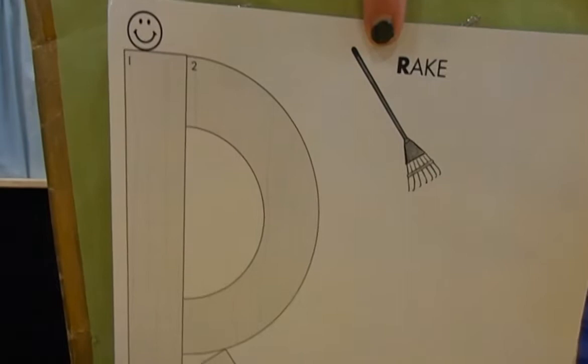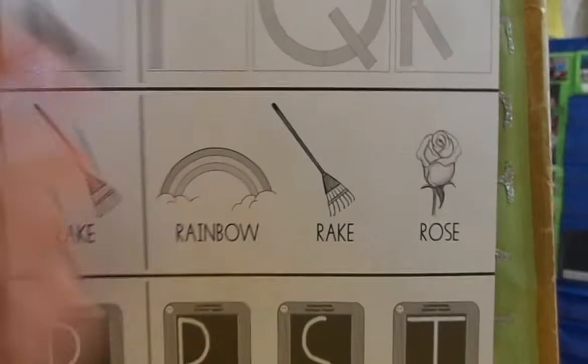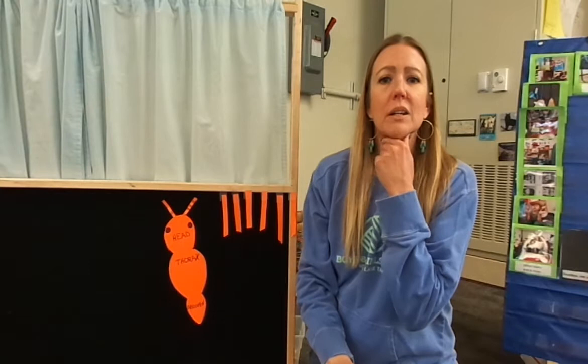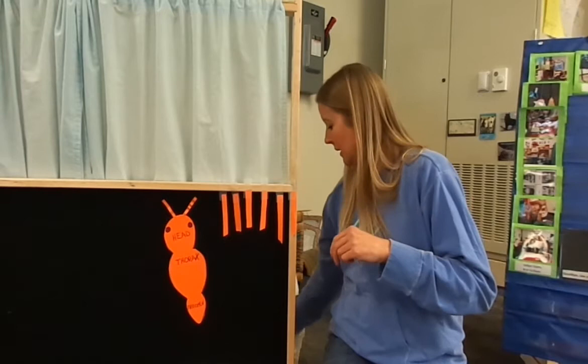Here's a word that starts with the letter R — it's a rake! R, R, R, rake. Let's think of some other words: rainbow, rake, rose. Can you think of any other words that start with the R sound? Look at a parent or someone in the room with you and say a word that starts with R — rainbow, rake, rain, run. Good job, friends!